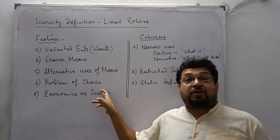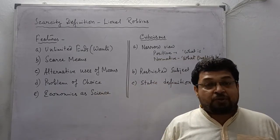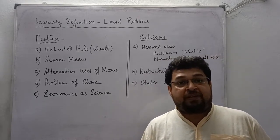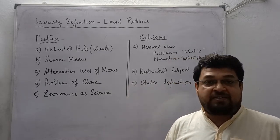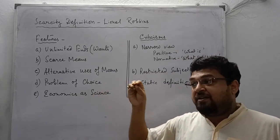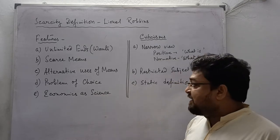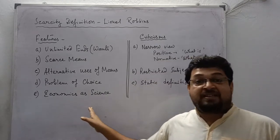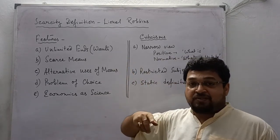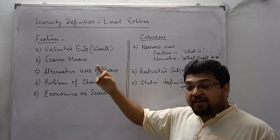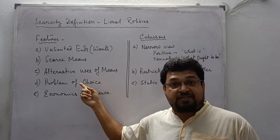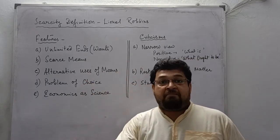There comes the problem of choice — you have to choose where resources can be best employed according to wants, to fulfill priority needs and urgent needs. The problem of choice is also part of the study of economics. Finally, Robbins described economics as a science, because in a situation where wants are unlimited and resources are scarce with alternative uses, they need to be properly chosen and employed.